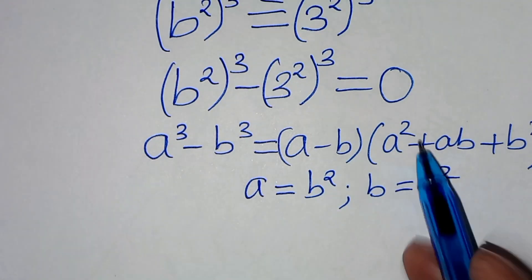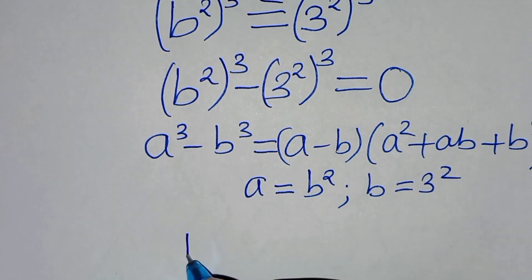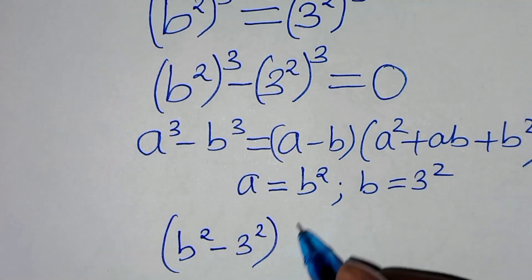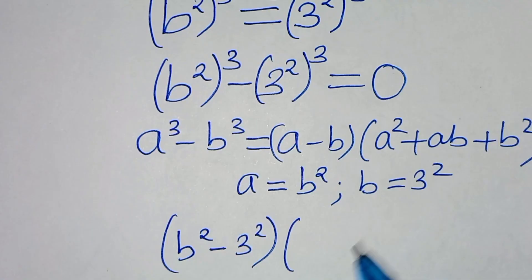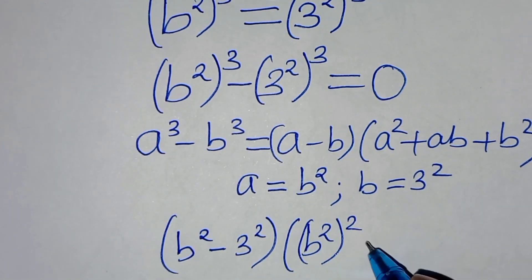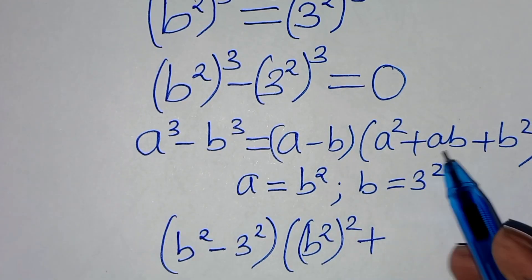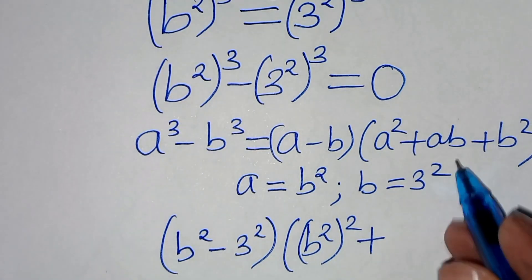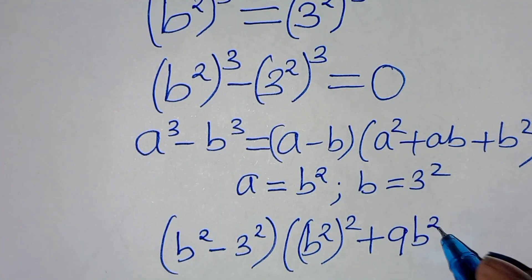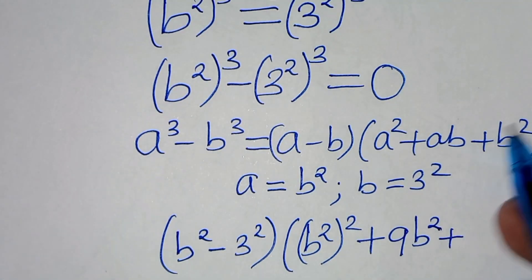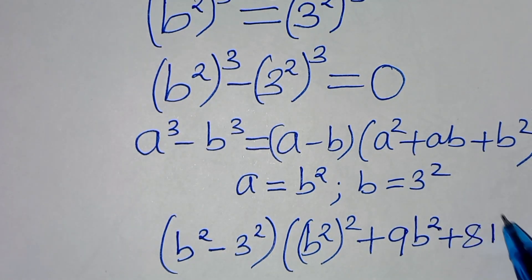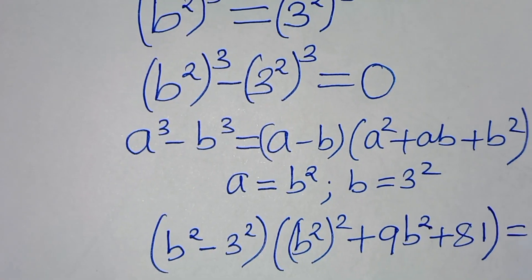So, here we have b squared minus 3 squared, close the bracket, and then a squared, which is b to power 2 raised to power 2, then plus ab, which is 3 squared — that is 9b squared — and then plus b squared, which is actually 9 squared, which is 81. This is equal to 0.